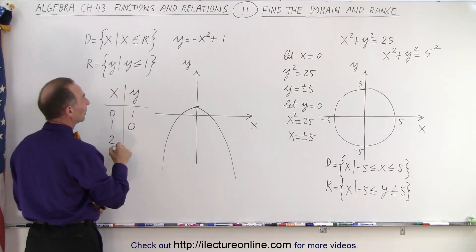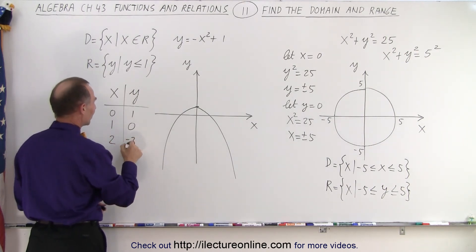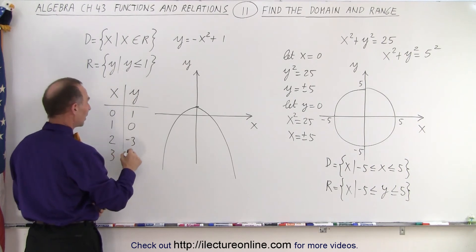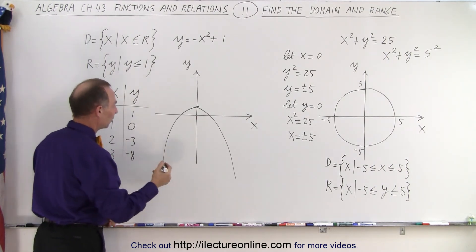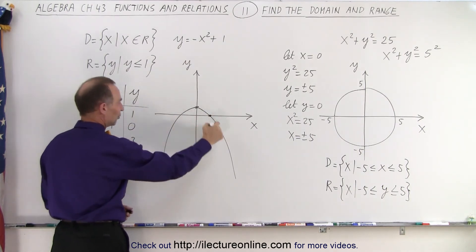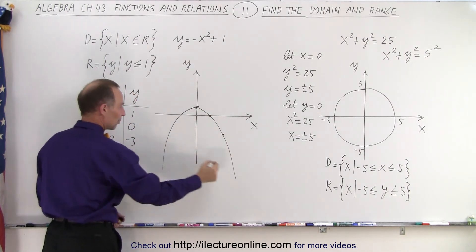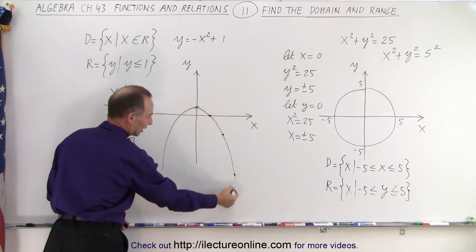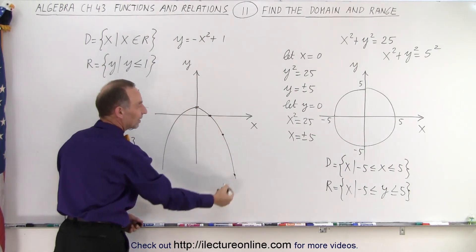And when x equals three, then y equals negative eight. And then you start plotting the points. We have zero, one. We have one, zero. Then we have two, negative three. And then we have three, negative eight. And then when you connect them, you say, ah, that's one side.